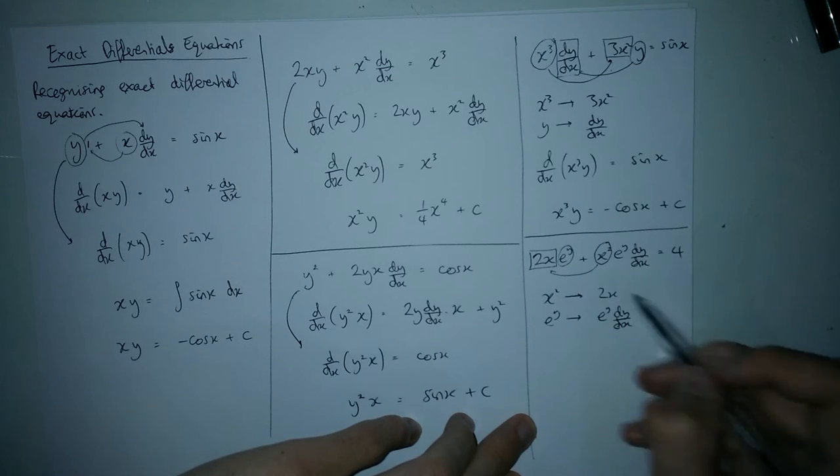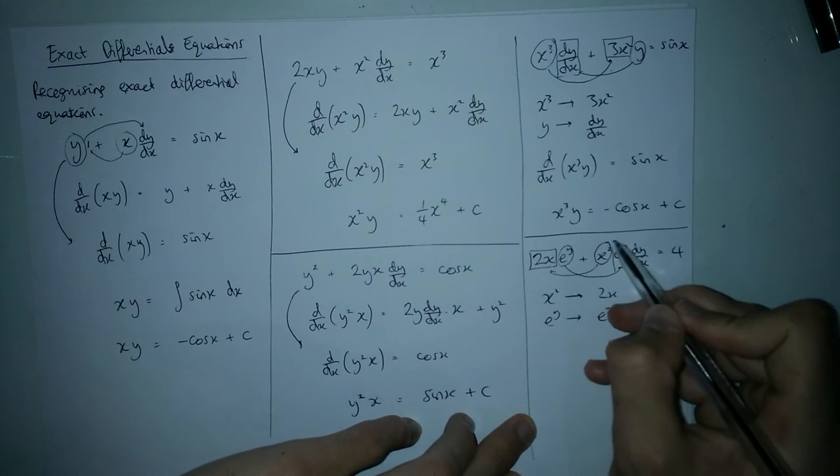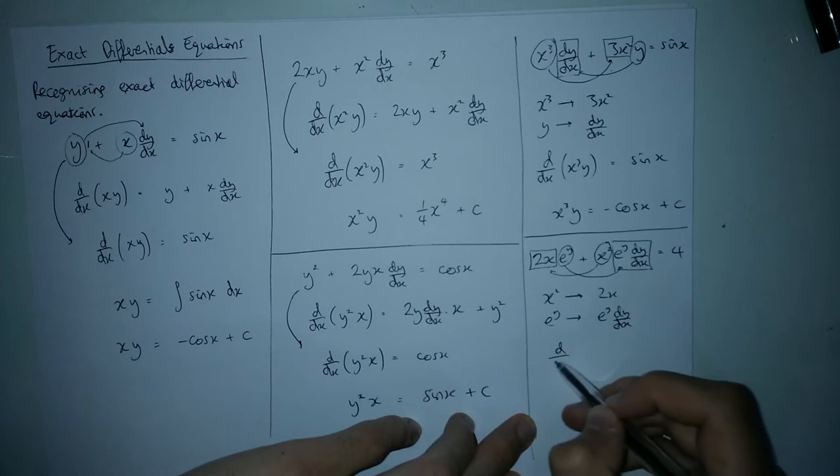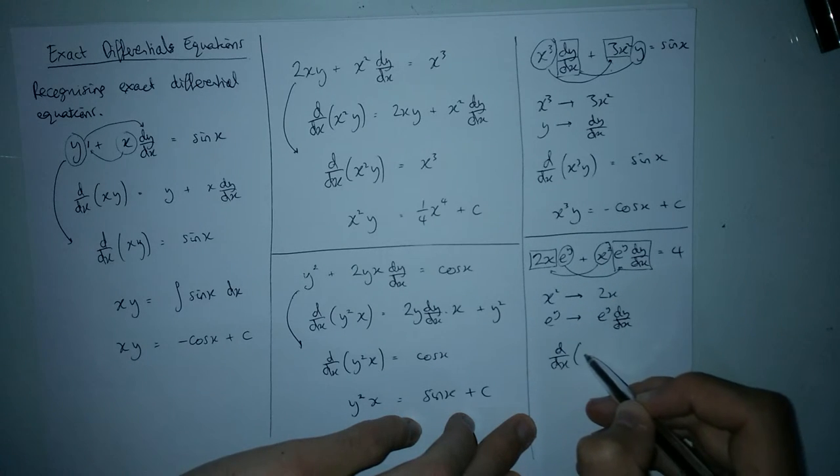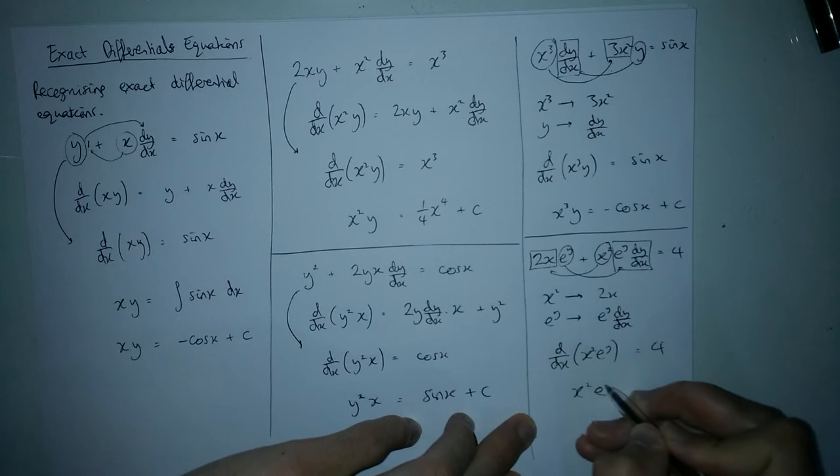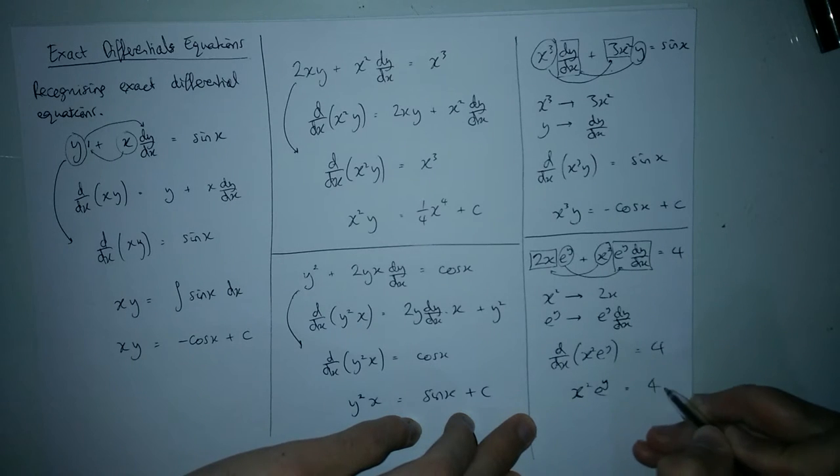And does that give it? Yeah it does. So this thing here could be written as d/dx of x squared e to the y and that's all equal to 4. Integrate this side gives me x squared e to the y. Depends that to run out. I integrate the 4, get 4x plus c obviously.